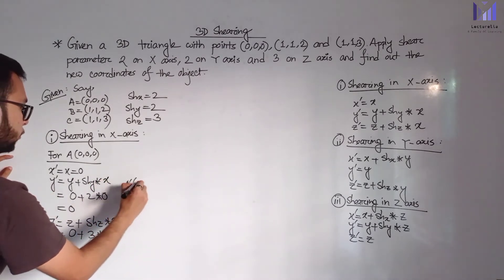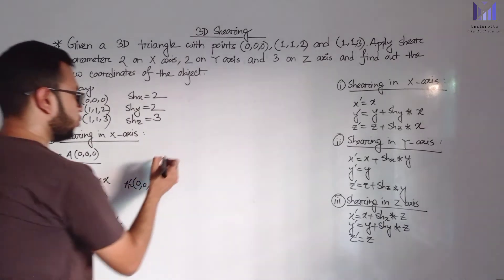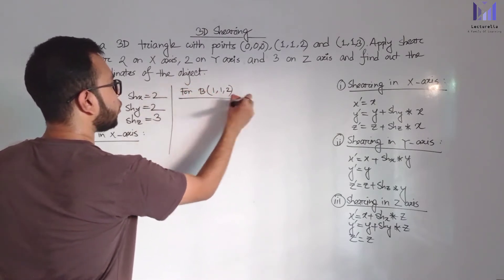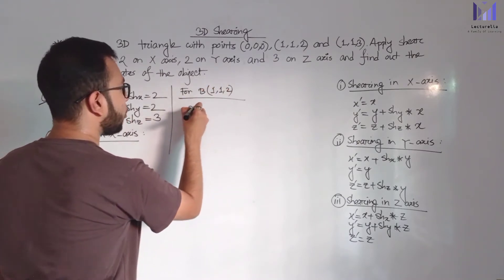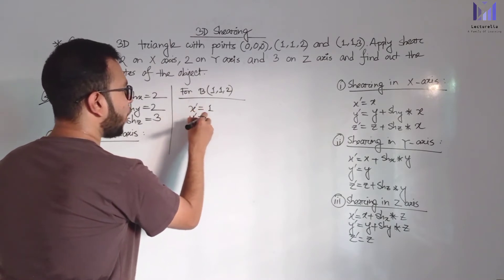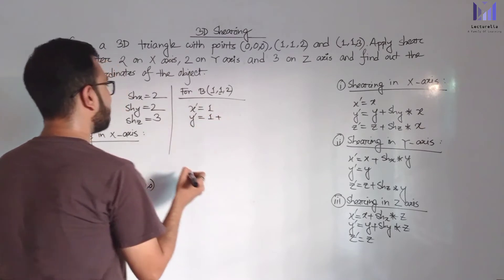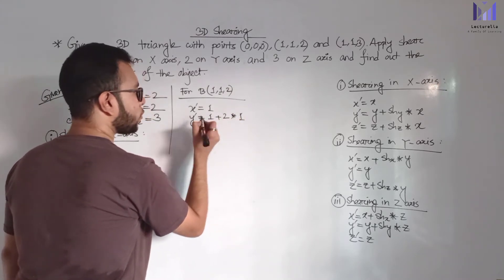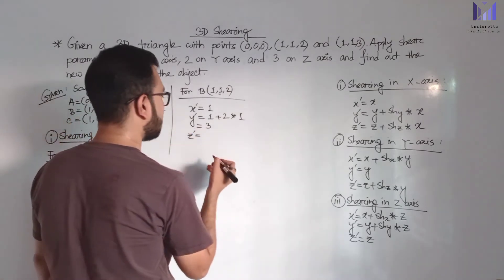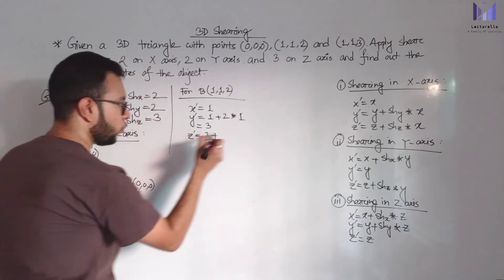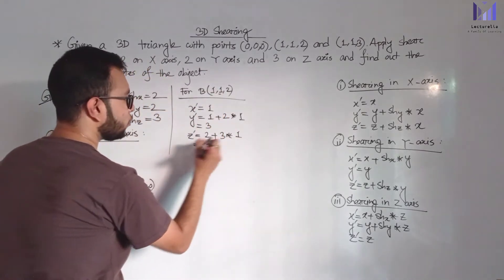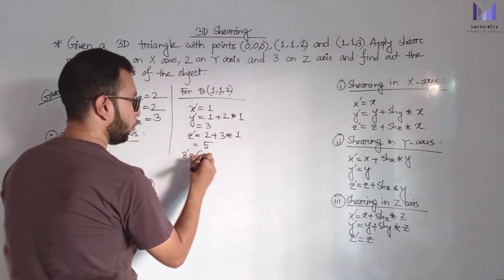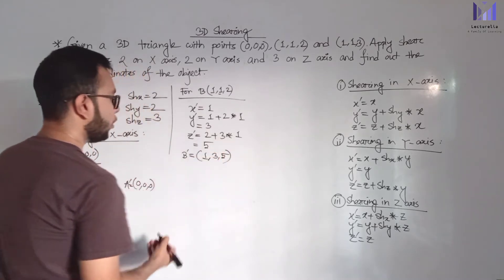For point B (1, 1, 2) under shearing in X-axis: X prime equals X which is 1; Y prime equals Y plus shearing parameter Y multiplied with X — 1 plus 2 multiplied with 1 equals 3; Z prime equals Z plus shearing parameter Z multiplied with X — 2 plus 3 multiplied with 1 equals 5. So B prime is (1, 3, 5).